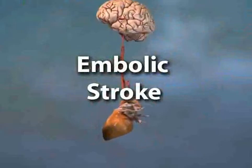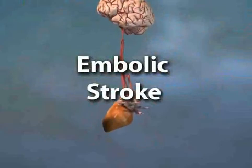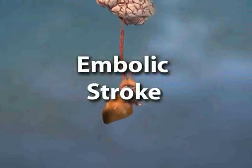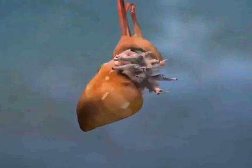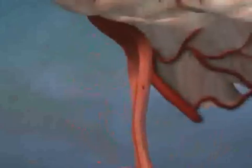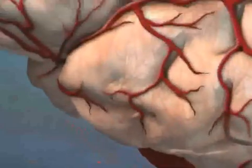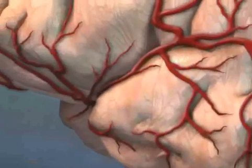An embolic stroke occurs when a clot travels to the brain from elsewhere in the body. Patients with atrial fibrillation or who have suffered a heart attack are at high risk of embolic stroke. This is because slow, irregular, or interrupted blood flow has a tendency to clot.